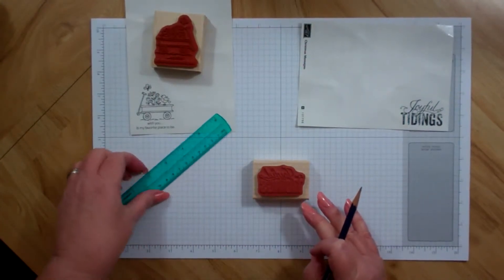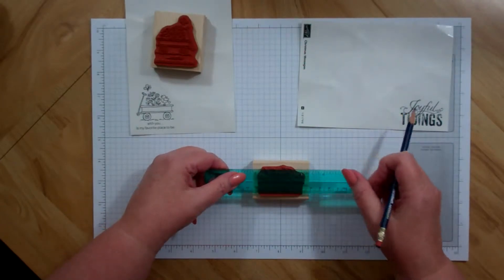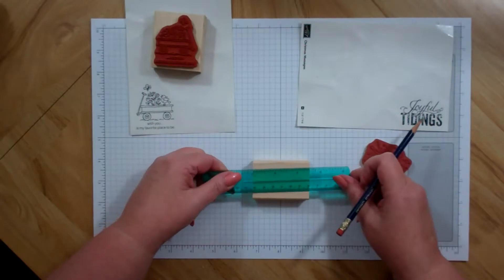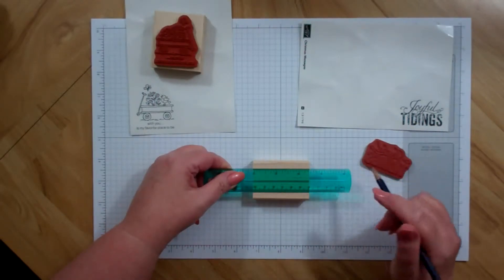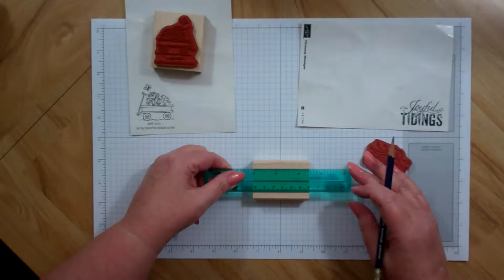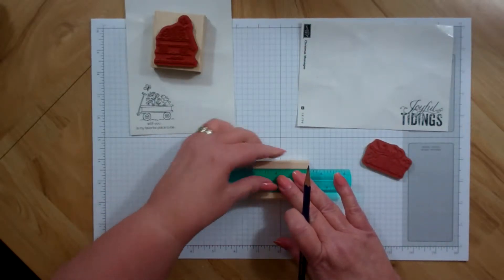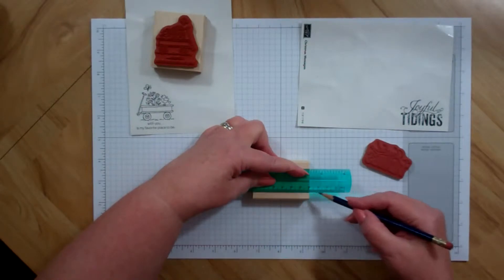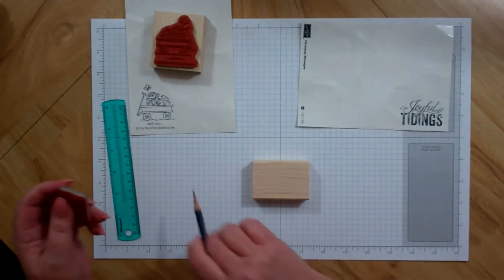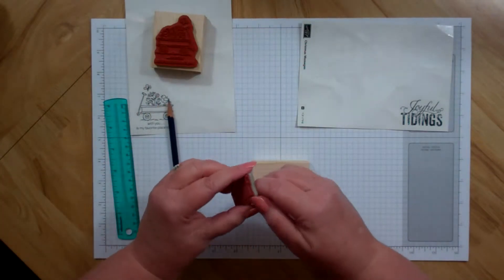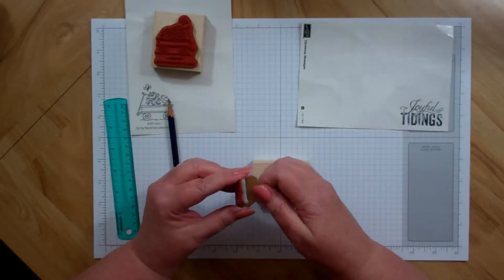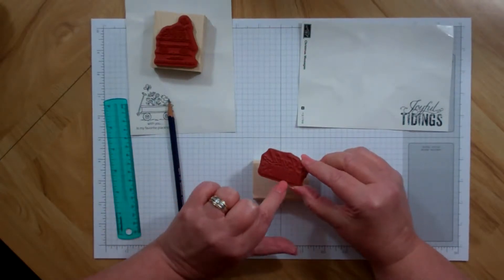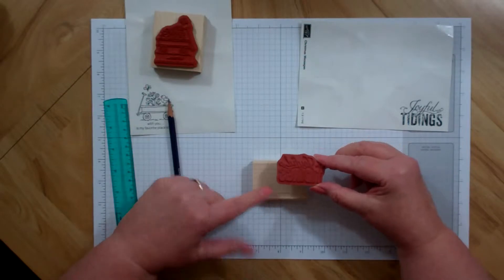And then I kind of judge how far down I'm going to have to make the line. So, I think that should be good. So, I make sure that I'm lined up straight across the wood block, draw a pencil line, and then I mount my stamp by lining up the straight word with the pencil mark.